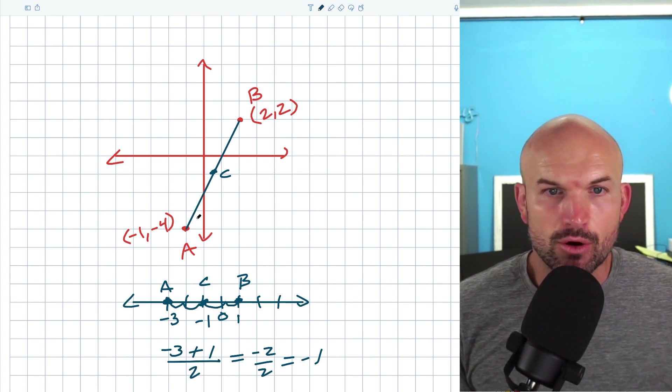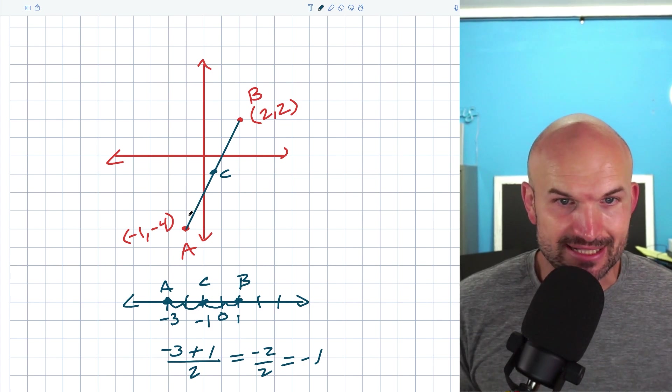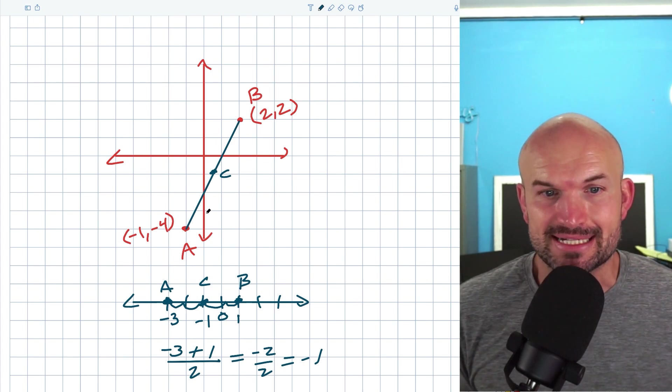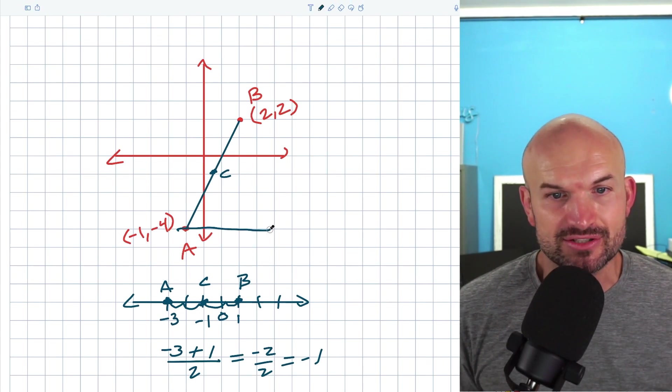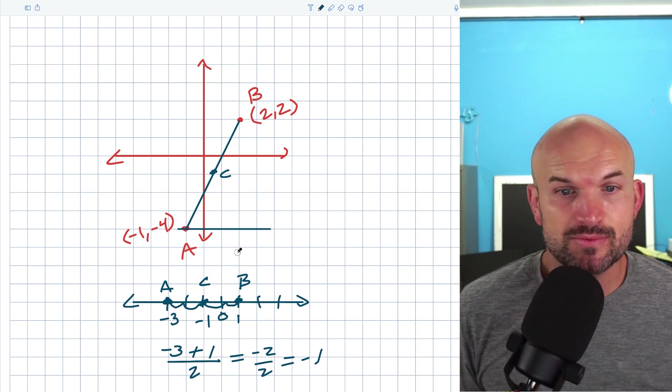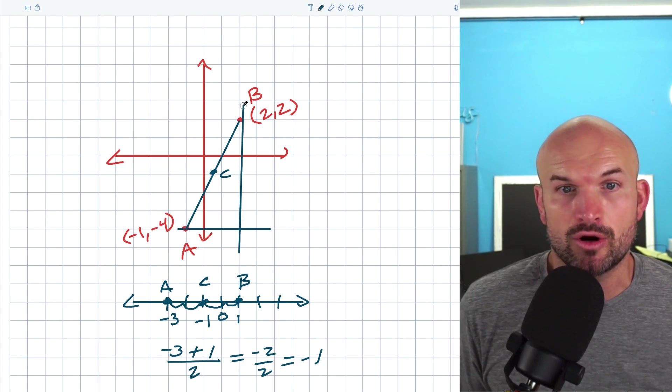So when we're looking at our points A and B, yes, there is a diagonal line that connects them, but also you can see that there is a horizontal distance that they are away from each other, as well as a vertical distance that they are away from each other.